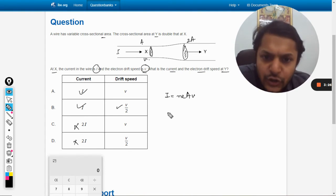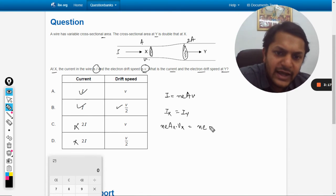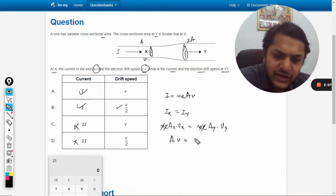Let me show you how: i_x = i_y, so ne A_x times V_x = ne A_y times V_y. The ne terms cancel, so area of x is a and velocity is v, area here is double and velocity is V_y. Clearly V_y is V_x divided by 2.